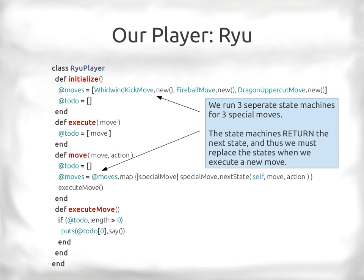The Ryu player has three special moves, running three concurrent state machines: whirlwind kick, fireball, and dragon uppercut. When it moves, we tell each special move to go to the next state, providing the direction (forward, backward, up, down) and the action (punch, kick, or nothing). Each move returns an object — either itself or another state — and we use map to store the returned values.